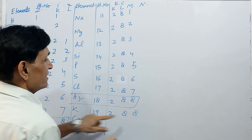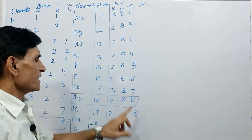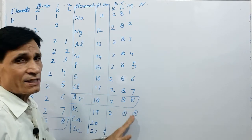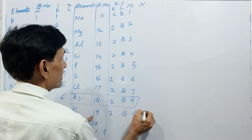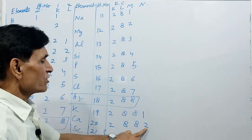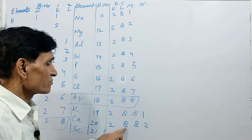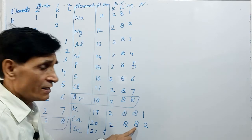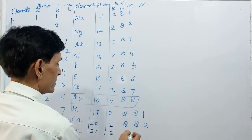Potassium (19): the third shell can hold 18 electrons, but according to the Bohr-Bury rule, the outermost shell cannot have more than 8. Even if it has capacity for more than 8, you should never write more than 8. As soon as 8 is completed, a new shell begins to form. So the 19th electron goes to the fourth shell. Potassium: 2, 8, 8, 1. Calcium (20): 2, 8, 8, 2.